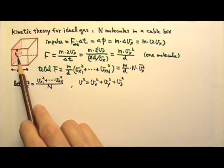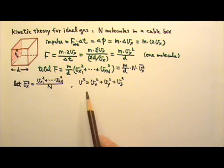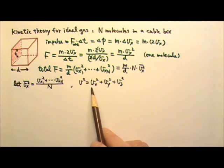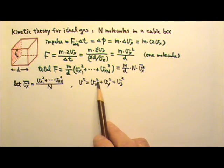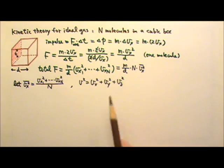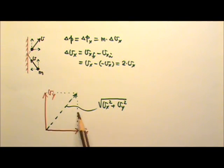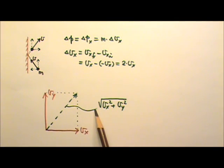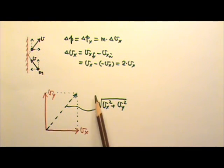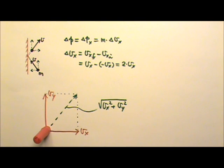Since the particle is really doing three-dimensional motion, we can say that the speed squared of that particle equals the x component of velocity squared plus the y component squared plus the z component squared. For an object with two components of velocity, the total velocity would be the diagonal, and the magnitude of this total velocity is the speed. So the speed is the square root of vx squared plus vy squared — that's the Pythagorean theorem.